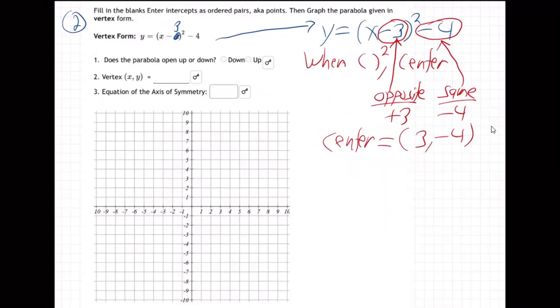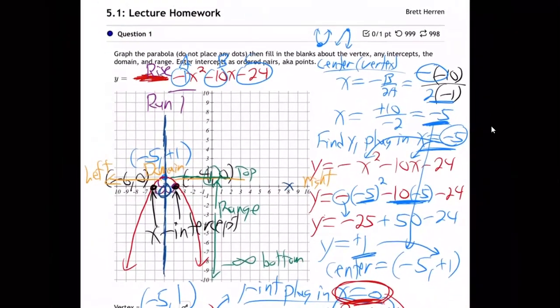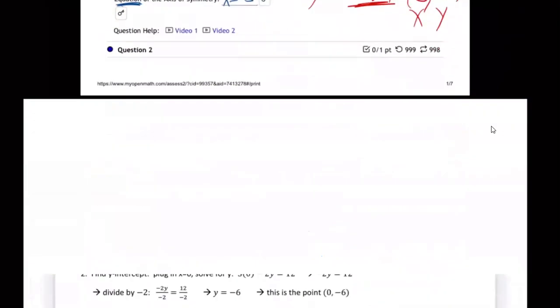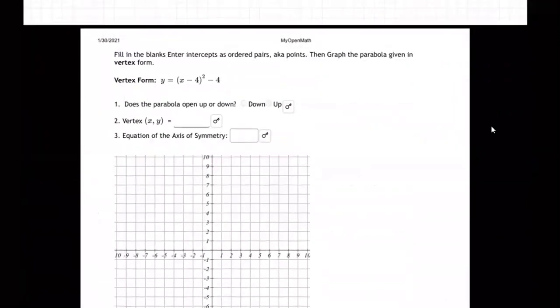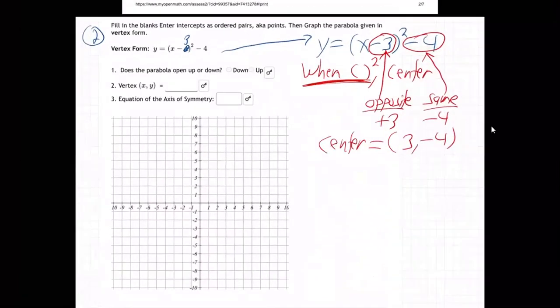That's only when there's parentheses squared. Remember back to example one, there were no parentheses, that's the harder kind when you have to do x is negative b over 2a. But on this one there's parentheses, so you just go opposite same. Opposite of negative three is plus three, same as negative four is negative four.